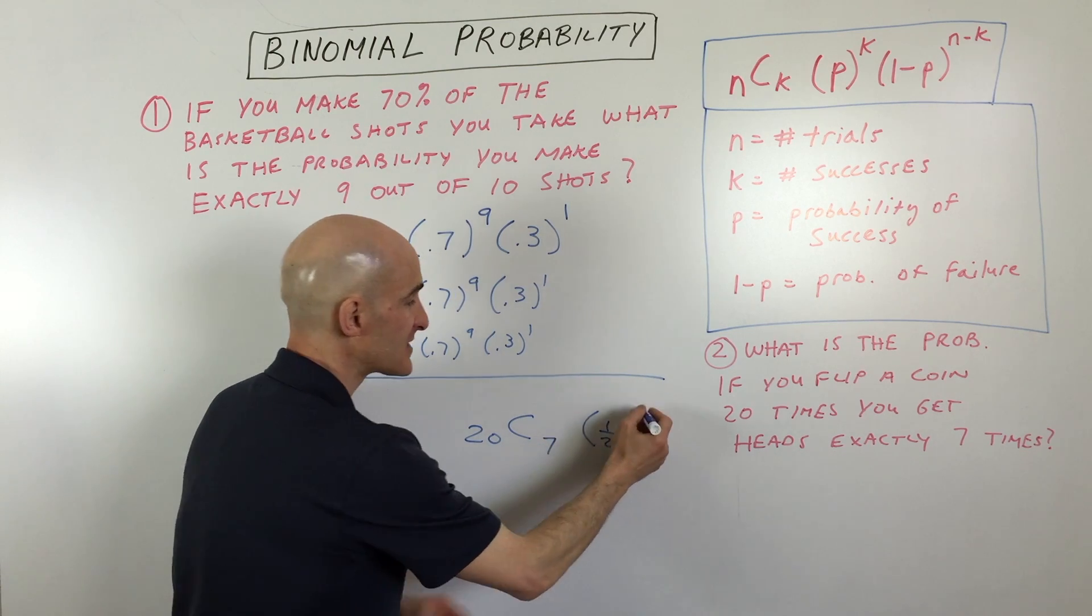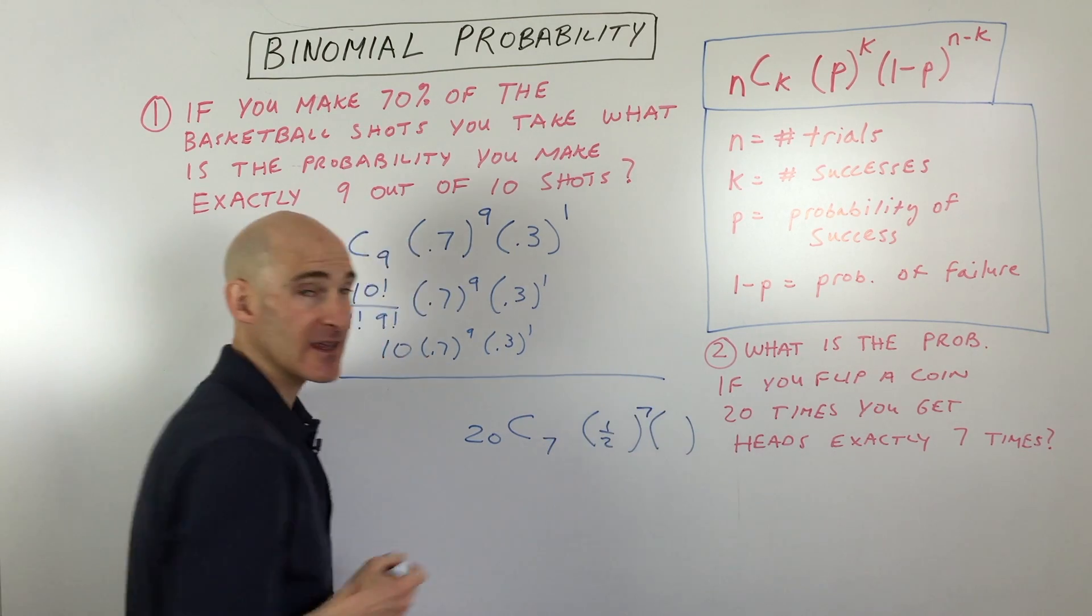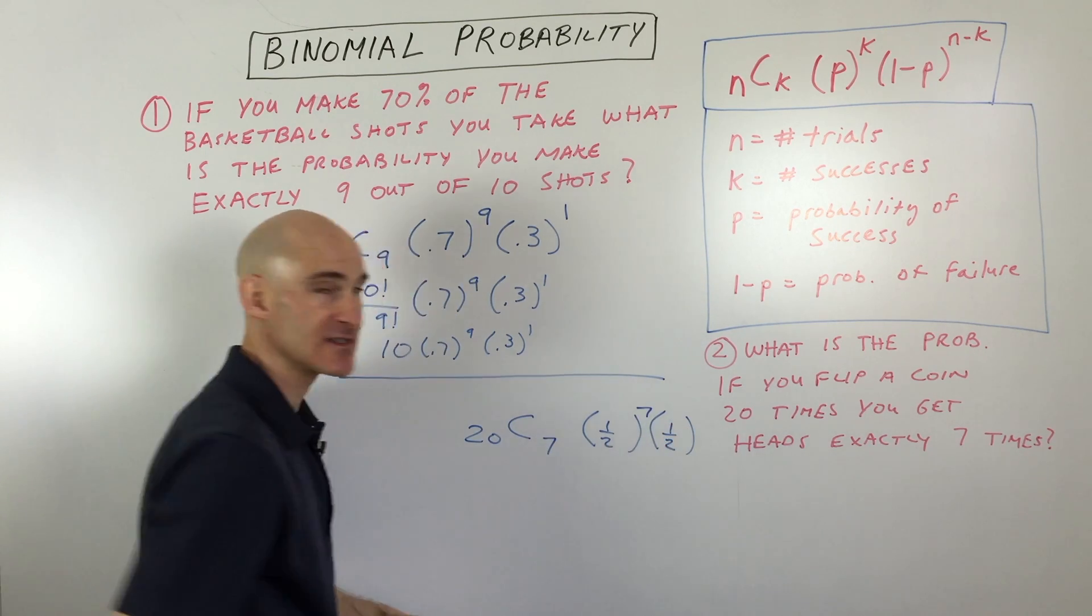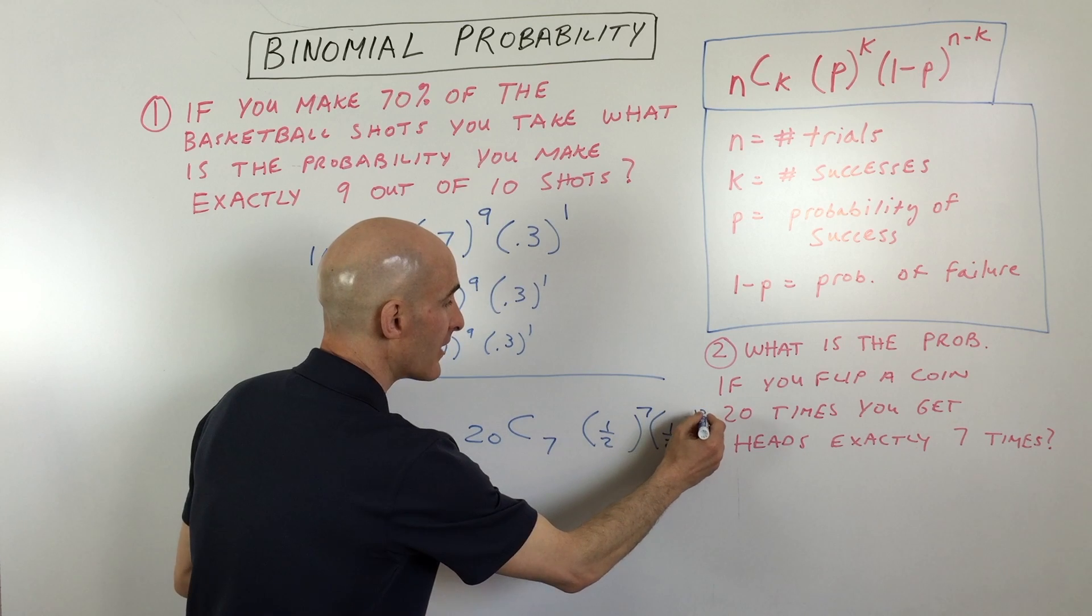We want to get heads seven times. Of course, not getting heads would also be 50% or one-half, getting tails. And that would have to be 13 of them.